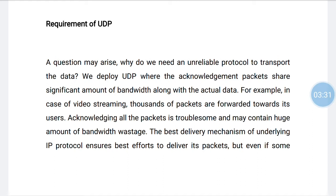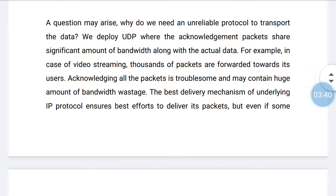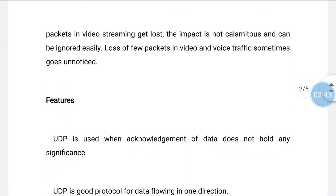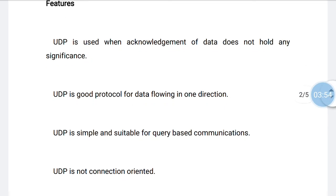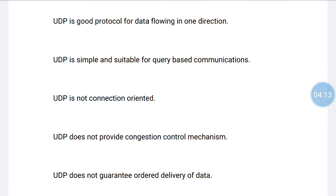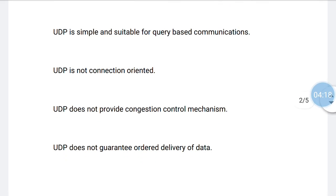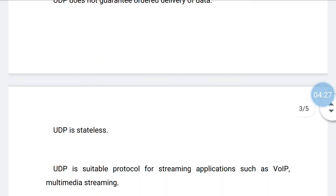The packet produced by the UDP protocol is known as a user datagram. UDP is used when acknowledgement of data does not hold any significance. It is a good protocol for data flowing in one direction. It is simple and suitable for query-based communication. UDP does not provide transaction and control mechanisms, and does not guarantee ordered delivery of data. UDP is stateless. These are the features of UDP, making it a suitable protocol for streaming applications such as VoIP and multimedia streaming.